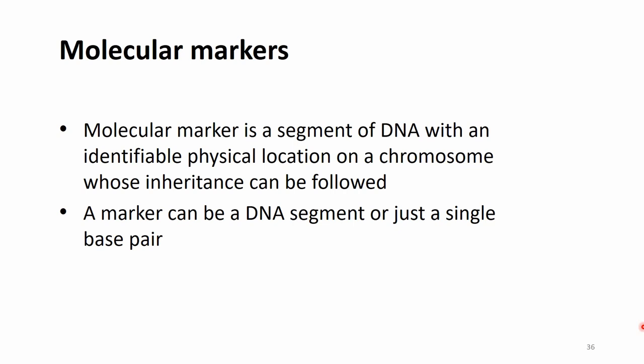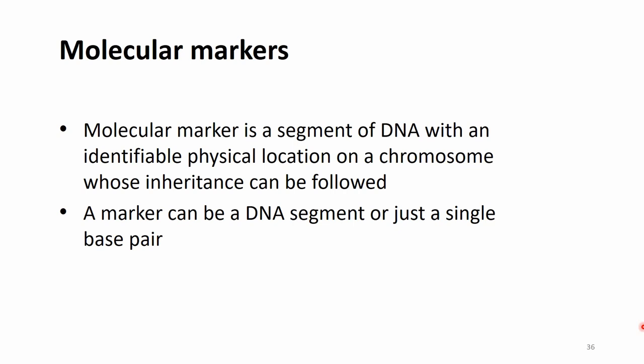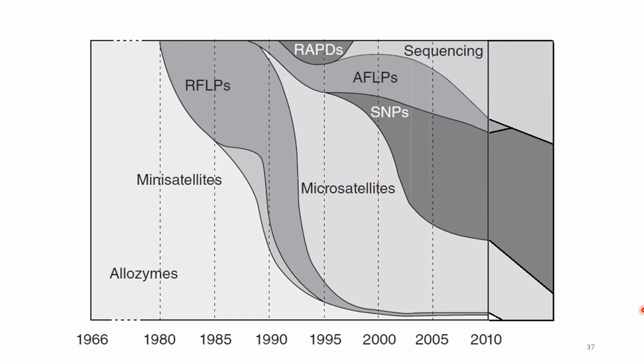A molecular marker is a segment of DNA with an identifiable physical location on a chromosome whose inheritance can be followed. This marker can be different things — a DNA segment or just a single base pair. There were different kinds of molecular markers throughout time, and this picture gives an impression of what these markers were and how popular they were at certain times.